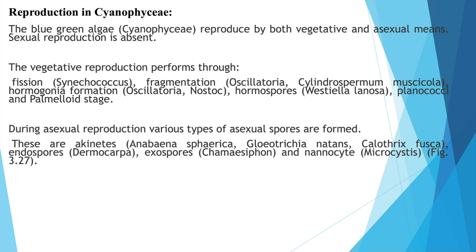During asexual reproduction, various types of spores are formed: akinetes in Anabaena, Gloeotrichia, and Calothrix; endospores in Dermocarpa; exospores in Chamaesiphon; and nanocytes in Microcystis.